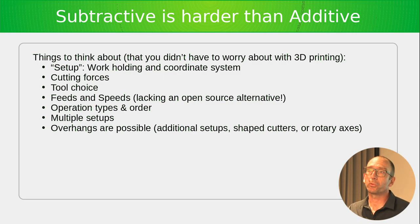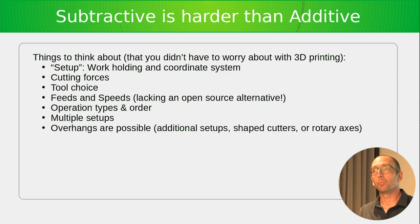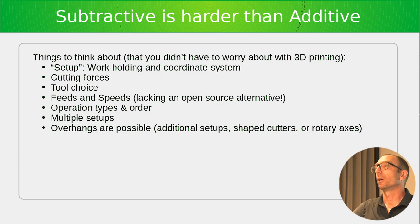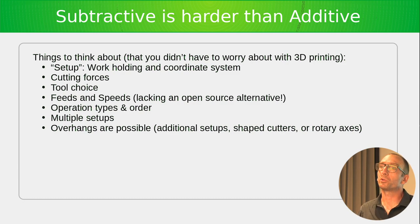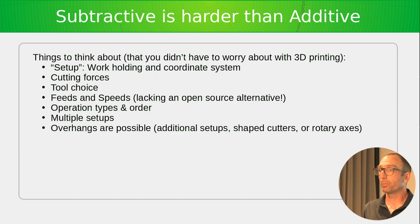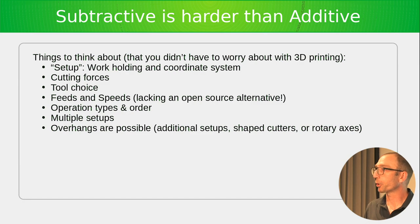Some parts will need multiple setups — for example, you might need to machine a surface not accessible from the top. You perform some operations, then stop the machine, flip or rotate the part, and re-zero. Once you release the part from the machine, your coordinate system becomes unknown and you have to re-zero the work in the machine.